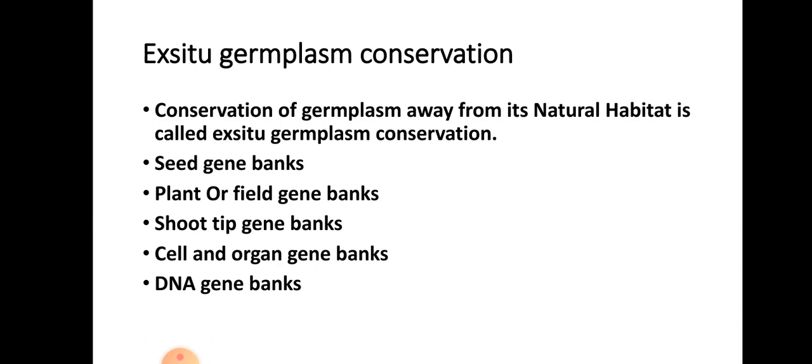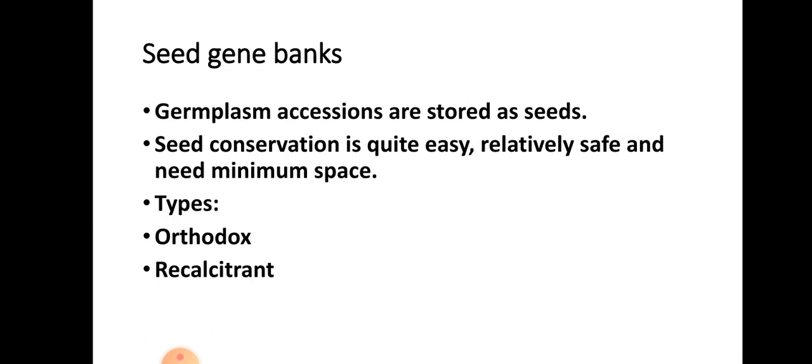In seed gene banks, the germplasm accessions are stored as seeds. Seed conservation is quite easy, relatively safer, and requires minimum space — seeds can be stored in thin plastic or glass containers. They can be stored for a very long period of time, even up to 50 to 100 years.